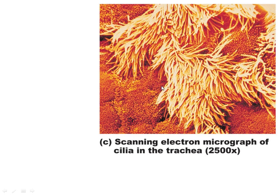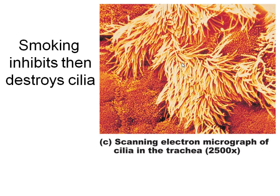A scanning electron micrograph shows these cilia looking like a dust mop. When you smoke, the cilia first become paralyzed and eventually are destroyed. This is why smokers develop that characteristic morning cough — the trapped mucus in the trachea must be brought up by coughing instead of the ciliary escalator.